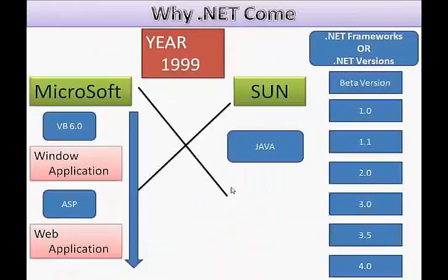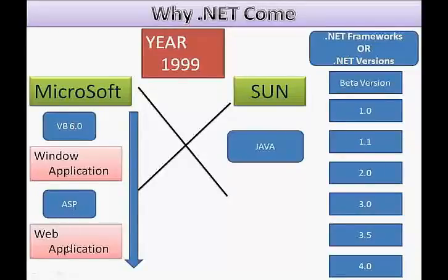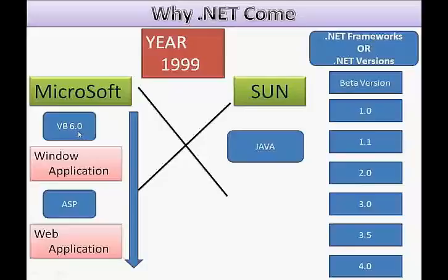Now let's discuss why .NET came into the market. In 1999 there was VB 6.0 and ASP — these were Microsoft's applications. VB 6.0 was specifically for window-based applications and ASP was for web-based applications. At that time Java was also a technology, and there was heavy competition between VB 6.0, ASP, and Java. Because of Java, the market share of VB 6.0 and ASP was continuously going down.